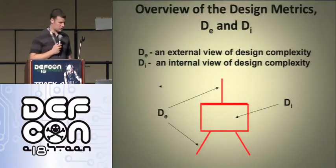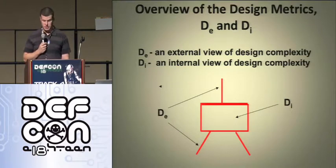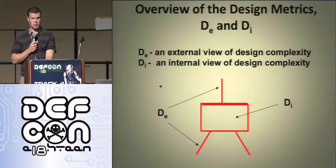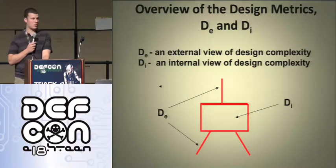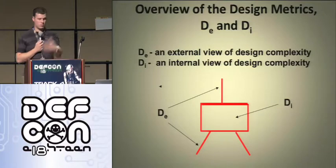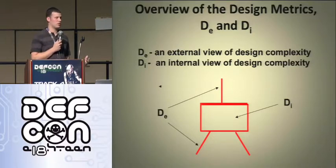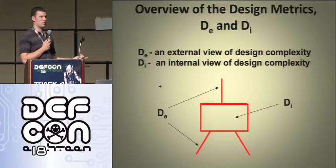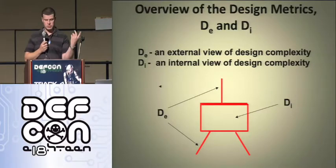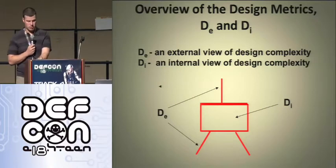Overview of the design metrics: D sub E and D sub I. D sub E is the external view of design complexity, and D sub I is the internal view of design complexity. That's pretty much what we're looking at — talking about faults in software. The more complex something gets, the more error-prone it's going to be. When they started this research, it was all about reliability. 20 years ago nobody really seemed to care about security, but they didn't want their software crashing. Reliability was the focus when this research started.